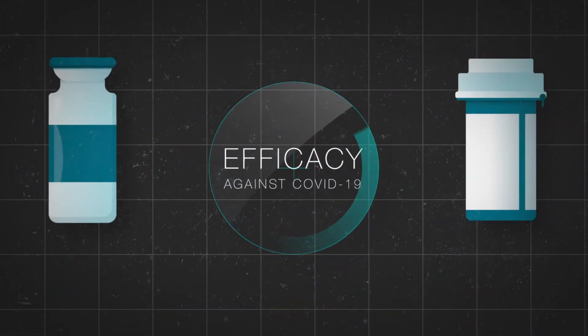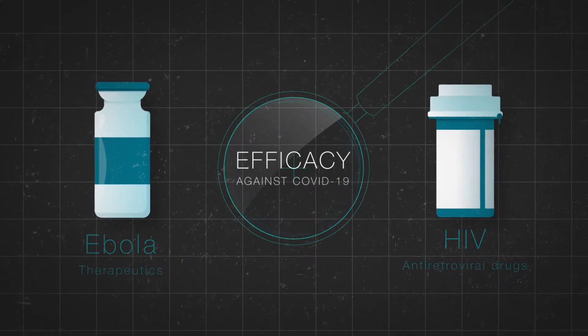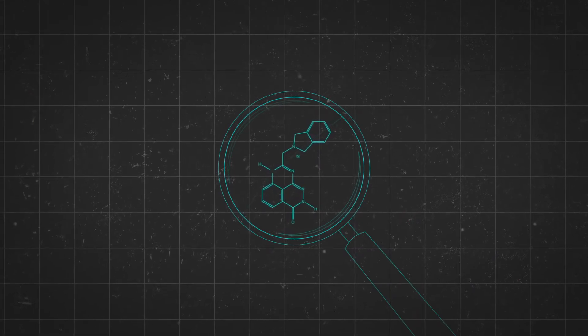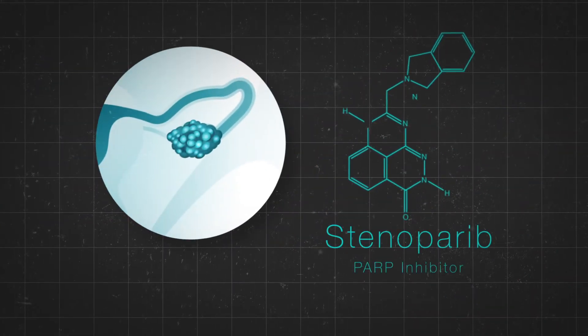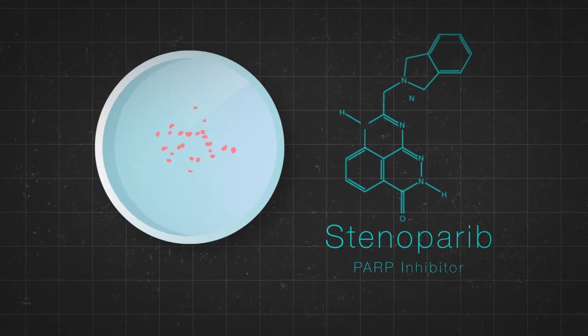Several drugs targeted against Ebola and HIV were repurposed and their efficacy was tested. In particular, Stenoperib, a new PARP inhibitor that was developed to treat ovarian cancer, was shown to impede SARS-CoV-2 replication in vitro.